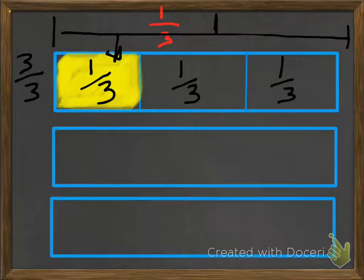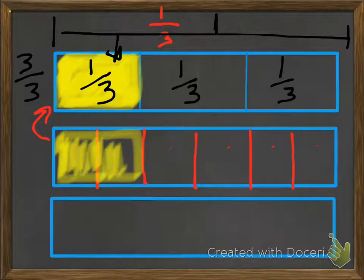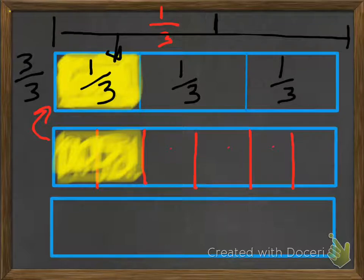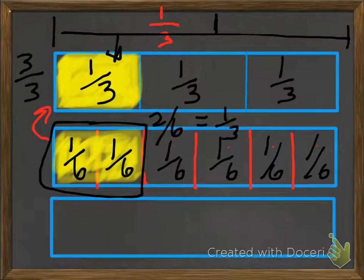Now, we're going to divide the second whole the same way, starting with thirds, then cut right down the middle of each third. Now we have six parts. It's still the same shape and size as the one above it. We're going to shade two parts, and even though we're shading two parts, it's the same amount of space. So two sixths is the same as one third — that's an equivalent fraction.